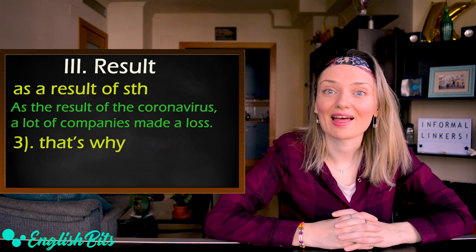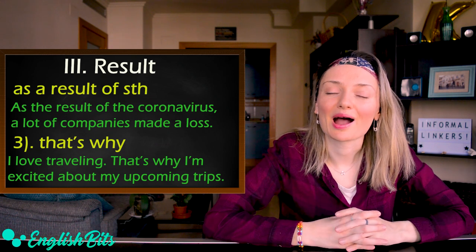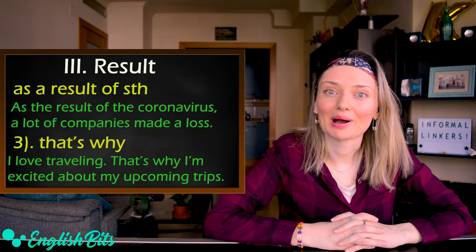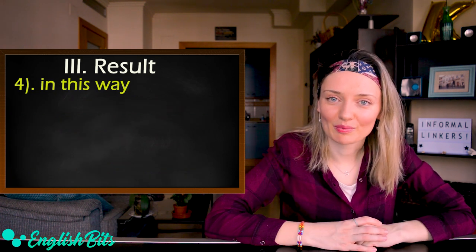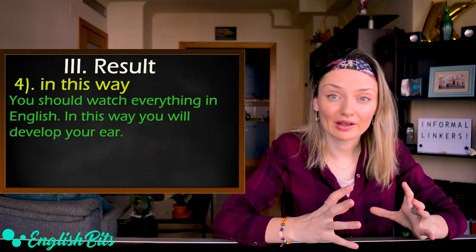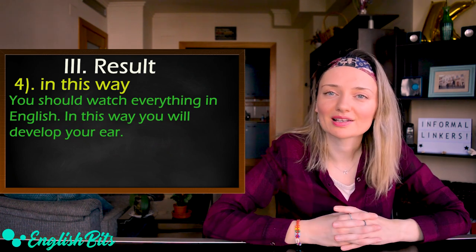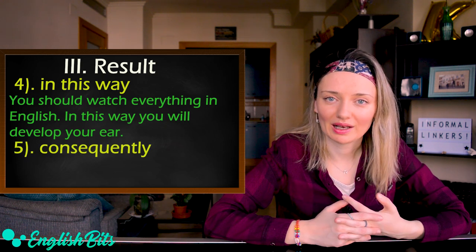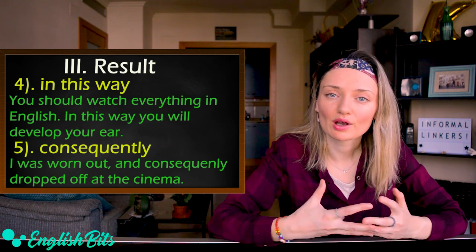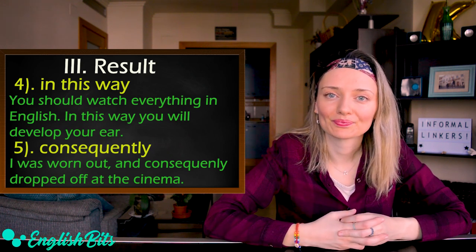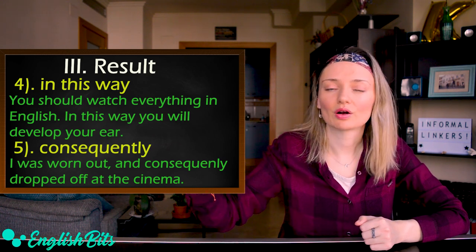Another linker is 'that's why' — for example: I love traveling, that's why I'm excited about my upcoming trips. Another is 'in this way' — for example: you should watch everything in English; in this way, you will develop your ear. The last linker in this group is 'consequently' — for example: I was worn out and, consequently, dropped off at the cinema. We have to use a comma before 'and,' then comma and 'consequently.'